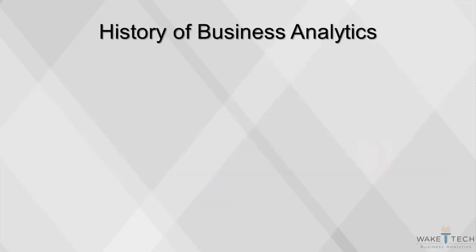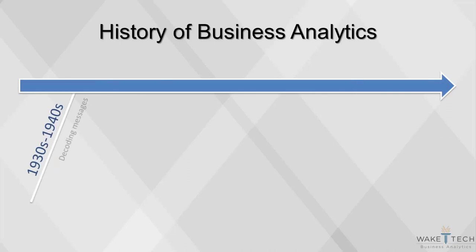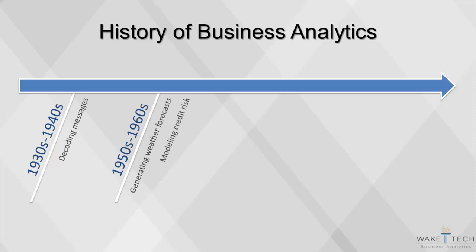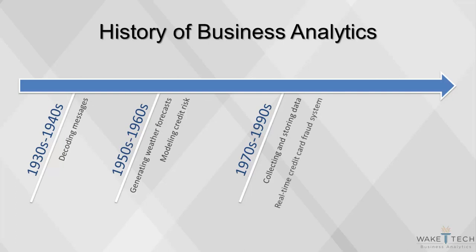Although the popularity of analytics has recently peaked, the field is nowhere as new as certain companies or people make it out to be. Since the computer was invented, it was being used to process data to solve problems—from decoding messages in World War II, to generating weather forecasts in 1950, to modeling credit risk in 1958. These tasks involved enormous computational costs, and only organizations with the most resources could attempt them. Toward the end of the 20th century, as computing power became more affordable, more organizations began collecting and storing data. The first real-time credit card fraud system was introduced in 1992, and then the first analytically-centric companies emerged. Companies such as Google use data to build their core product, while others such as Amazon use analytical techniques to earn market share from competitors. The rapid ascension of these tech companies has led to an arms race where all businesses have become committed to analytics.